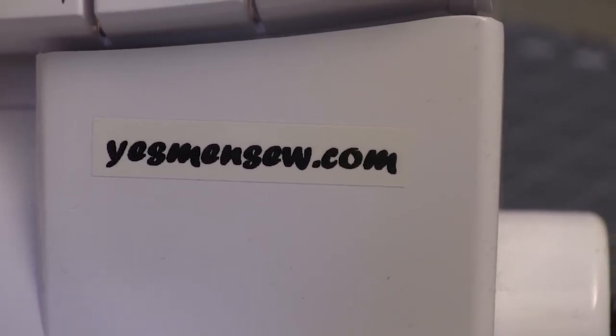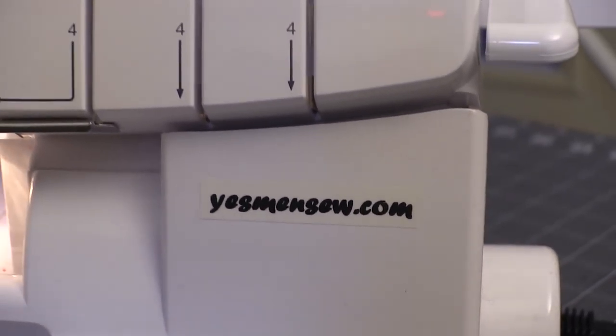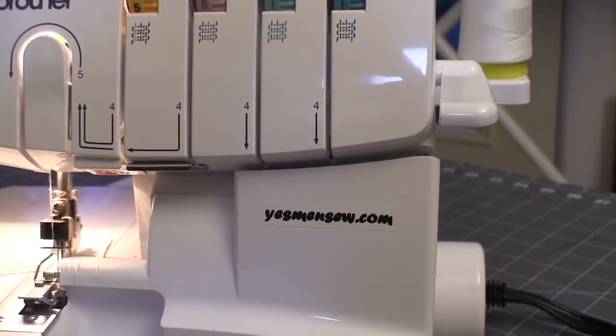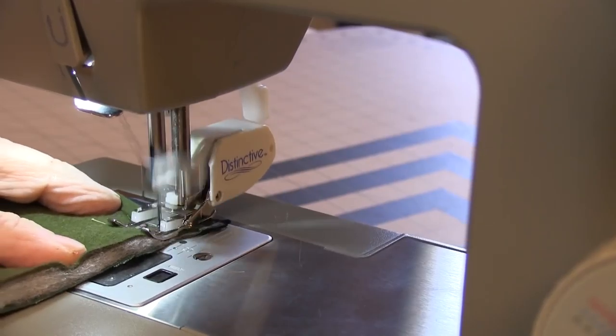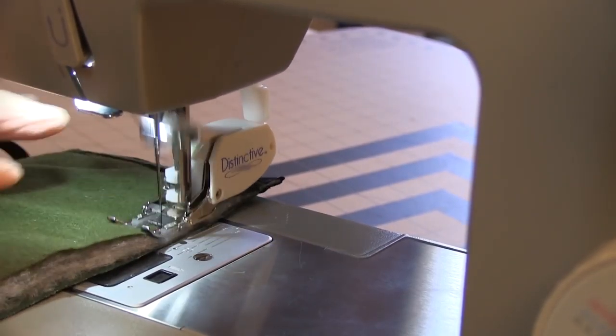In this review we look at the Brother 1634D serger. At one time I swore to never use a serger again, but then Brother comes along with this one. Pretty much any sewing machine can join two pieces of fabric.